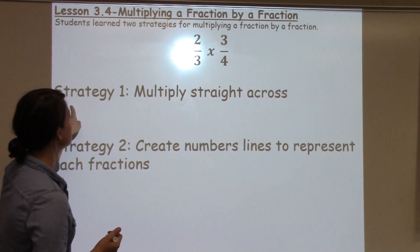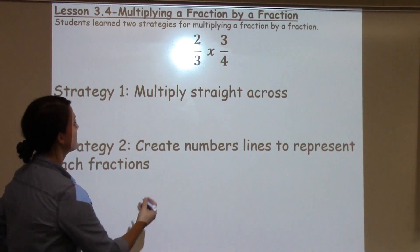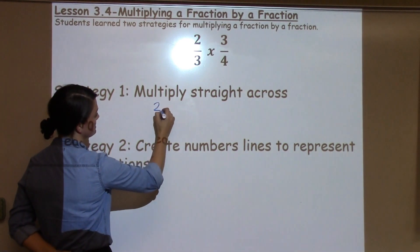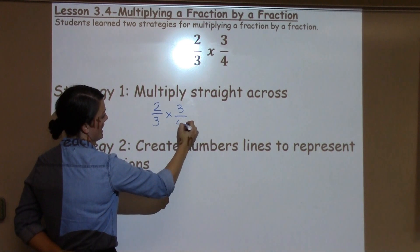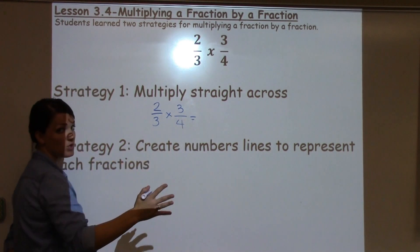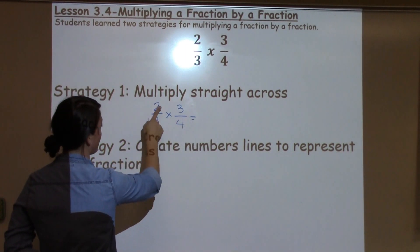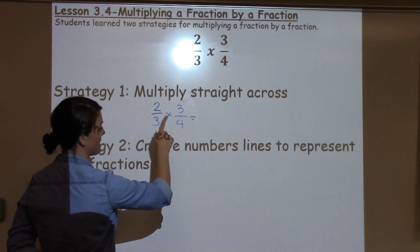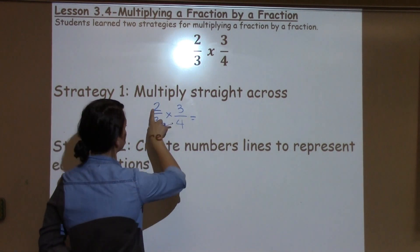The first one is just to multiply straight across. So, I'm going to work with 2 thirds times 3 fourths. And again, this strategy is just to multiply straight across. I say tops times tops, bottoms times bottoms. That's one way to think of it.